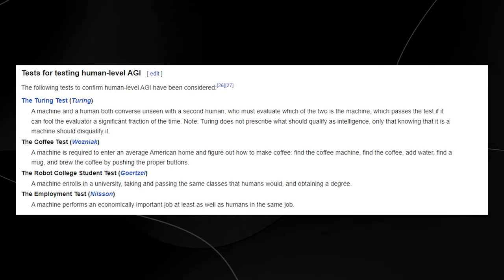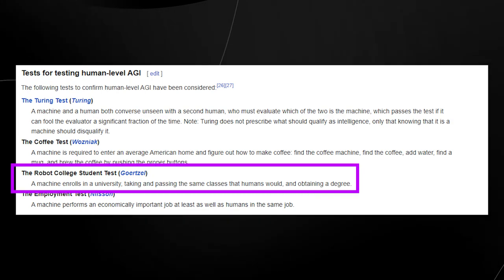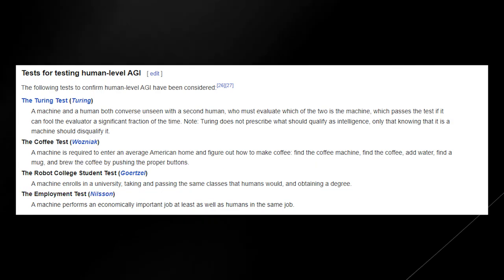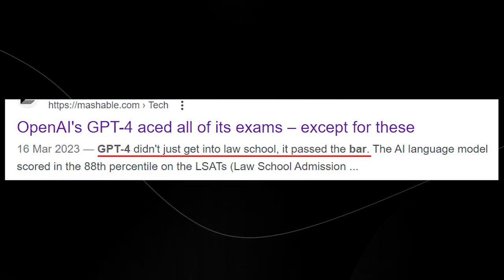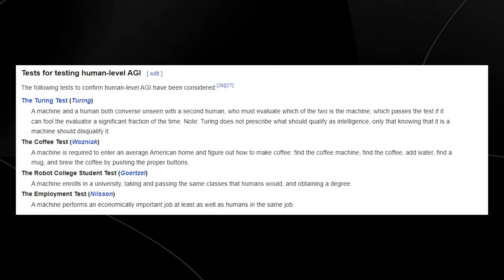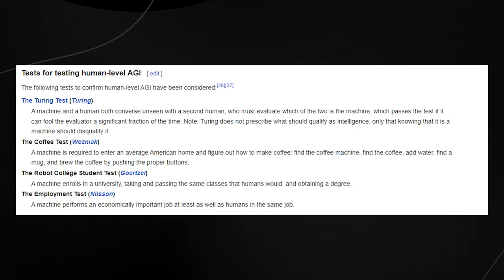AGI isn't actually here yet, but one of the key tests for human-level AGI is the robot student college test. As you can see, a machine enrolls in a university passing the same classes a human would and obtaining a degree. From this, you can already see that GPT-4 didn't just get into law school, it has already passed the bar.